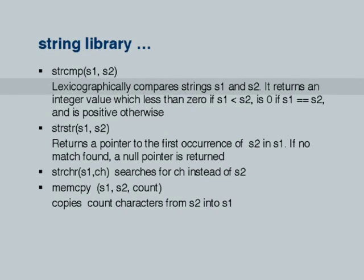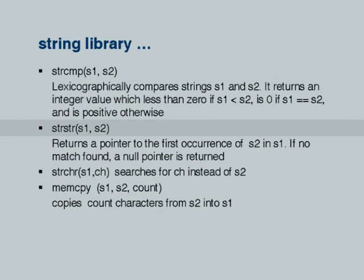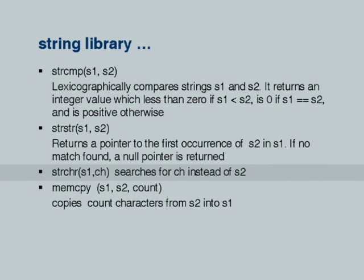There is a lexicographic comparison which compares two strings. It will return a value less than 0 if one string is smaller, 0 if both strings are the same, and positive otherwise. STRSTR actually searches a string inside another string. STRCHR searches for a character inside a string. Suppose there is a string in which you want to locate a comma because the string contains two values separated by a comma — I can do that search by using the STRCHR function.